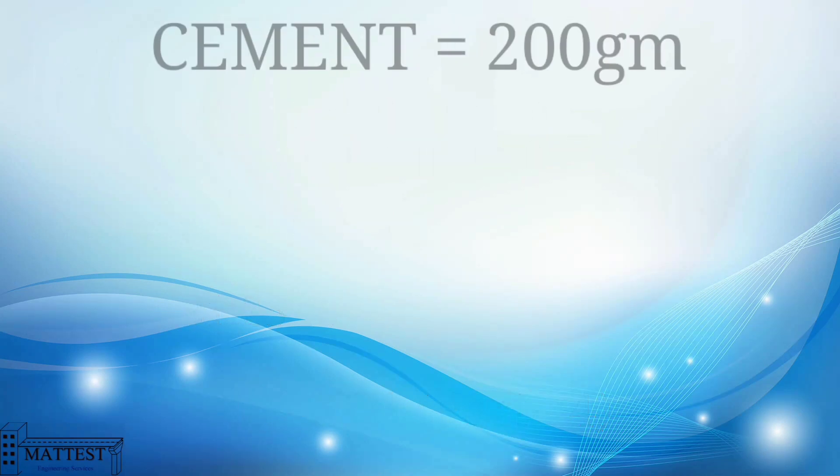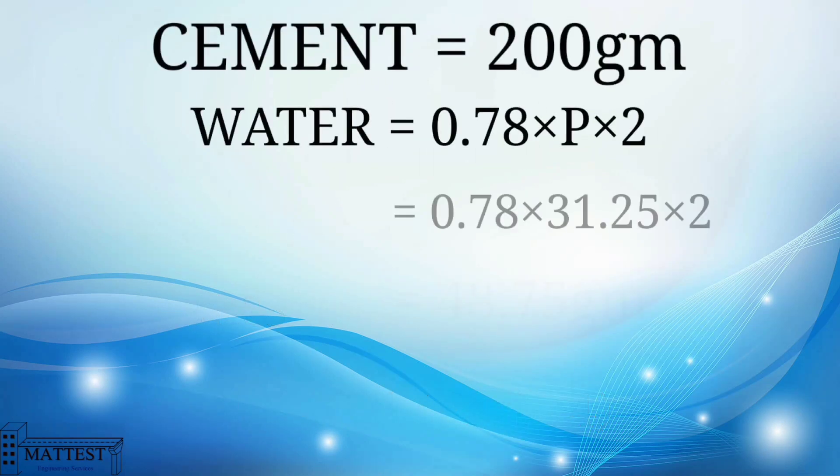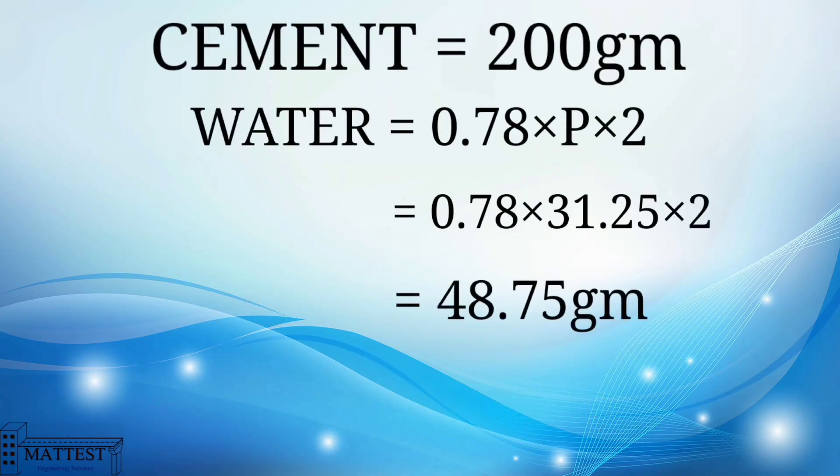Take 200 grams of cement and 48.75 grams of water for the soundness test of cement.